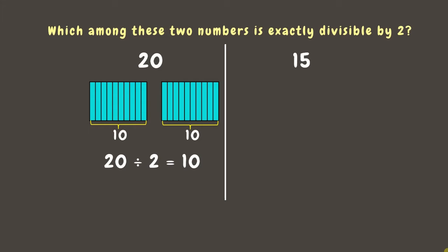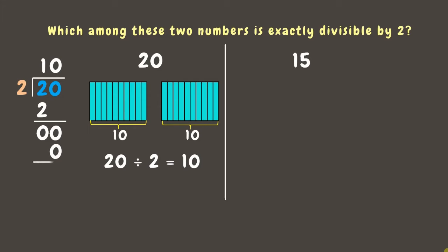Now, let's check this using the long division method. 20 divided by 2: 2 divided by 2 is 1. 1 times 2 is 2. 2 minus 2 is 0. Bring down 0. 0 divided by 2 is 0. 0 times 2 is 0. Subtract: 0. Therefore, the answer is 10. It means that 20 is divisible by 2.